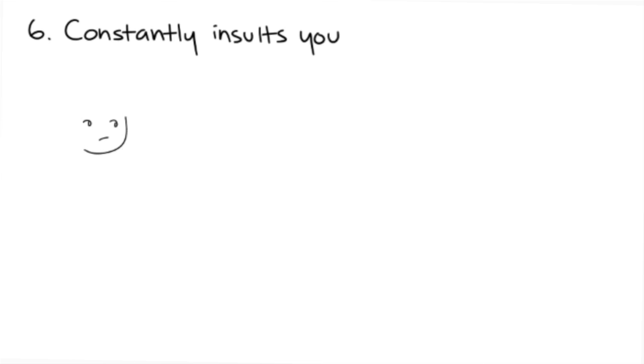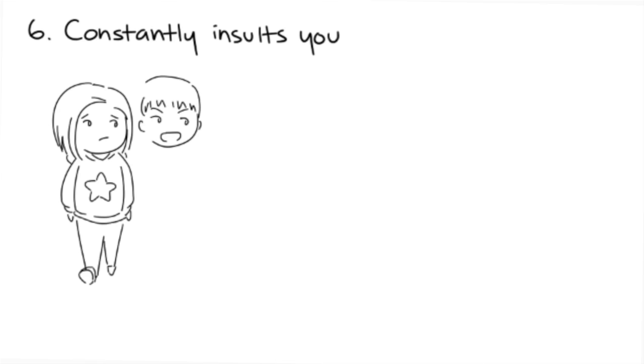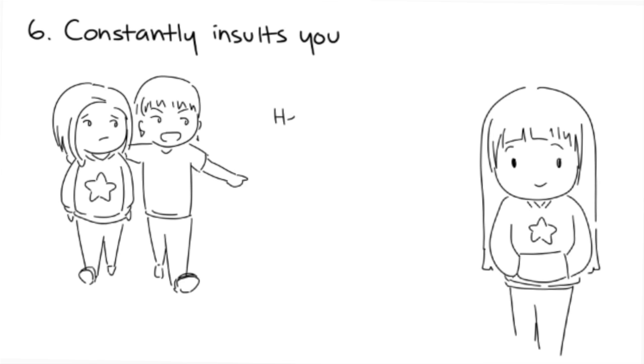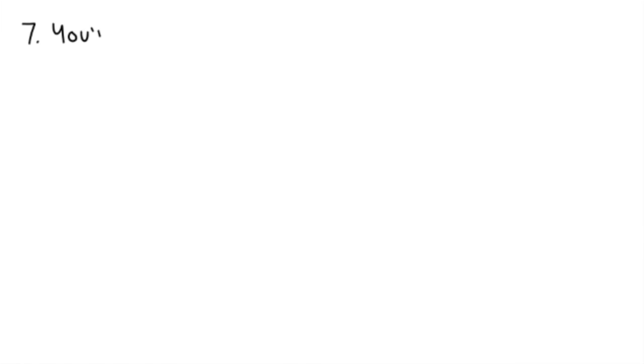However, there won't actually be any changes, continuing the cycle of mistreatment and manipulation. Six: they constantly insult you. Your partner's jabs don't always have to be direct. Let's say you're wearing an outfit similar to another person you both encounter.